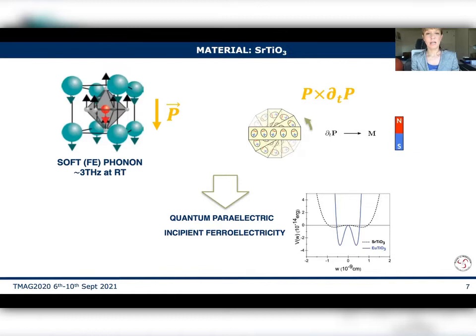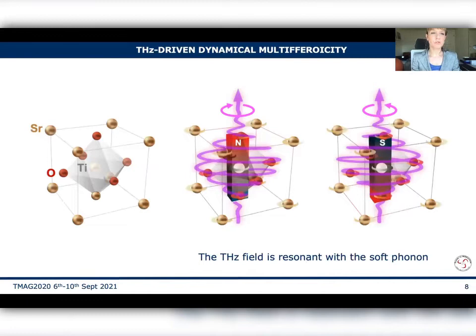So this is the idea. We want to enter in the unit cell of strontium titanate with a circular polarized terahertz resonant with the soft phonon and to drive the atoms in a circular path and to generate a magnetic moment inside the unit cell. Please note that by reversing the helicity of the excitation, you would be able to reverse the sign of the magnetization. And this is important if you want to isolate such a contribution in the experiment.